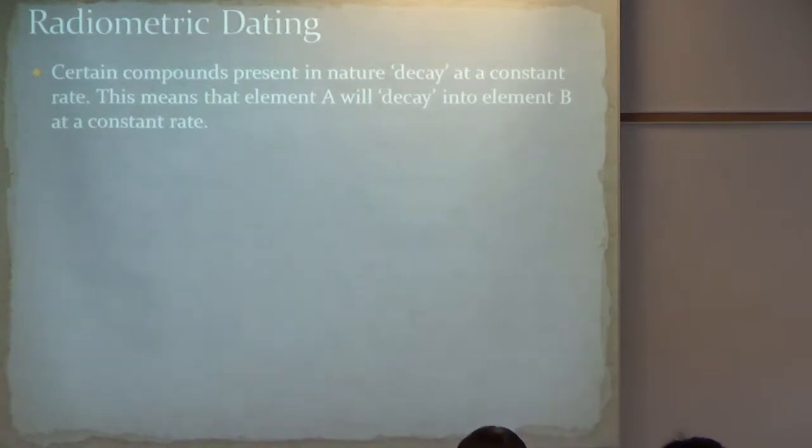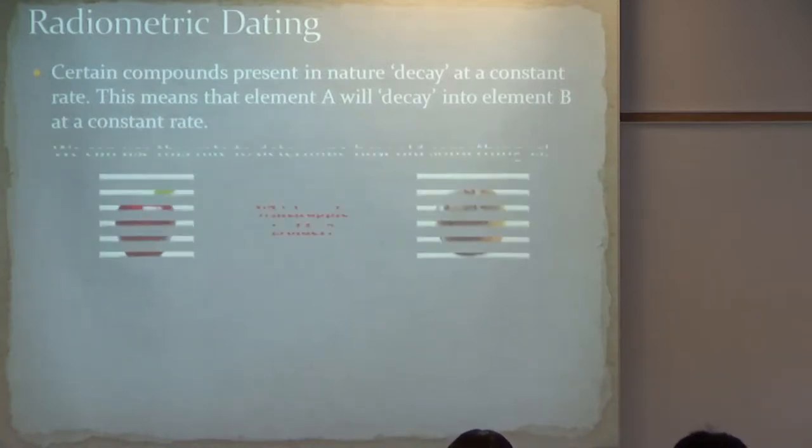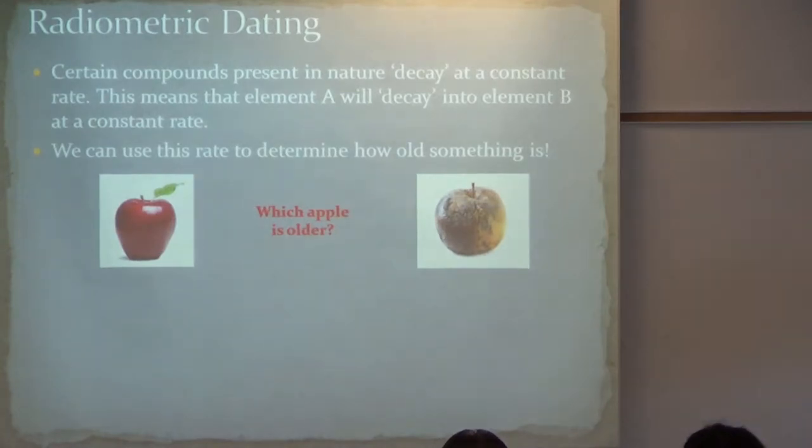Well, this has been a prediction by his theory for 100 years. And just recently, the equipment's become sensitive enough, and we've had the technology to verify that. So this is an example of a scientific theory making a prediction that we had no way to verify at the time. But after enough experiments and technological advances, boom, Einstein is right again. So how do we check, verify, prove the age of the Earth? The main tool we have in our toolbox is radiometric dating. So how does this work? Basically, certain compounds in nature decay at a constant rate.